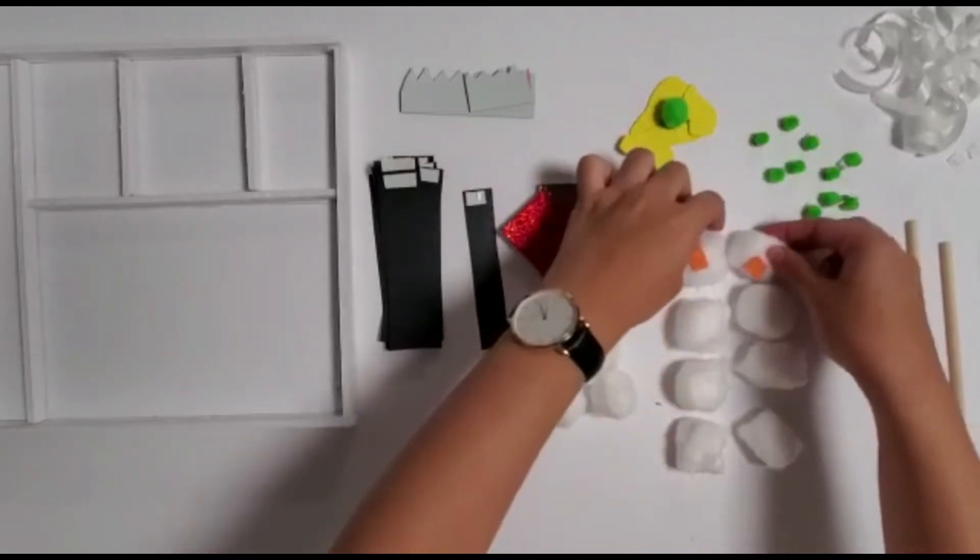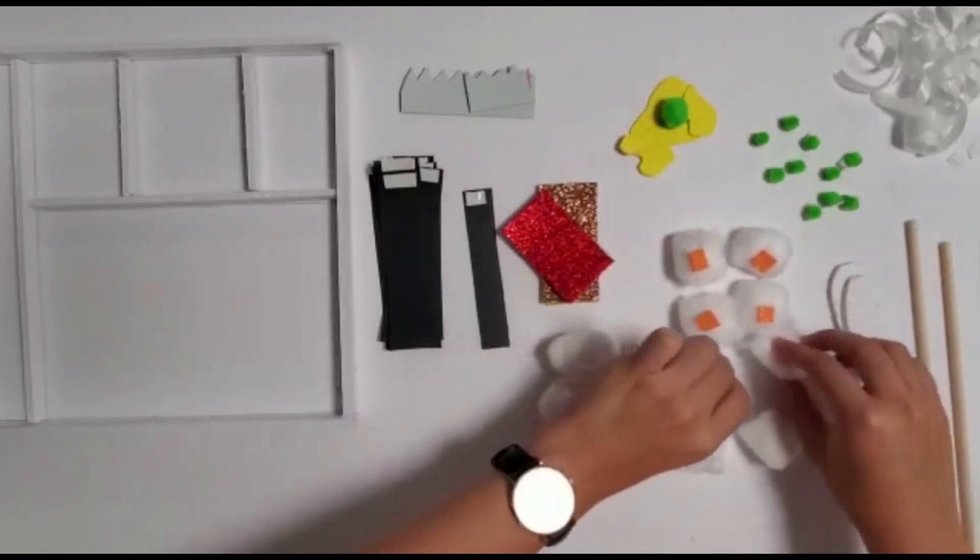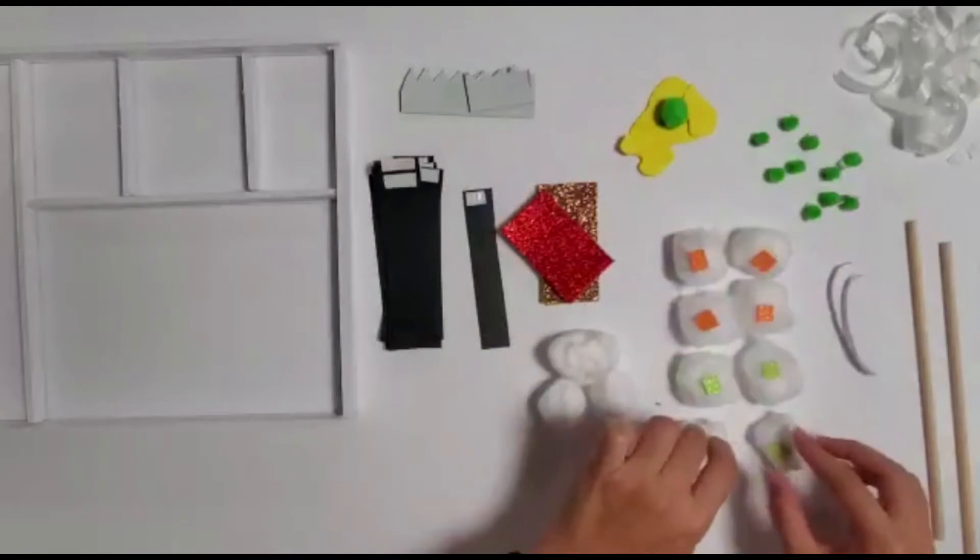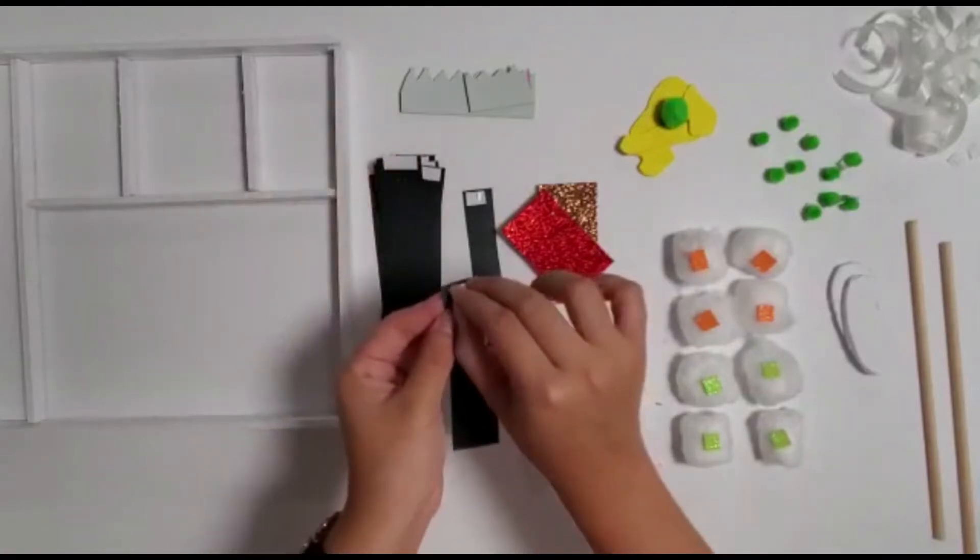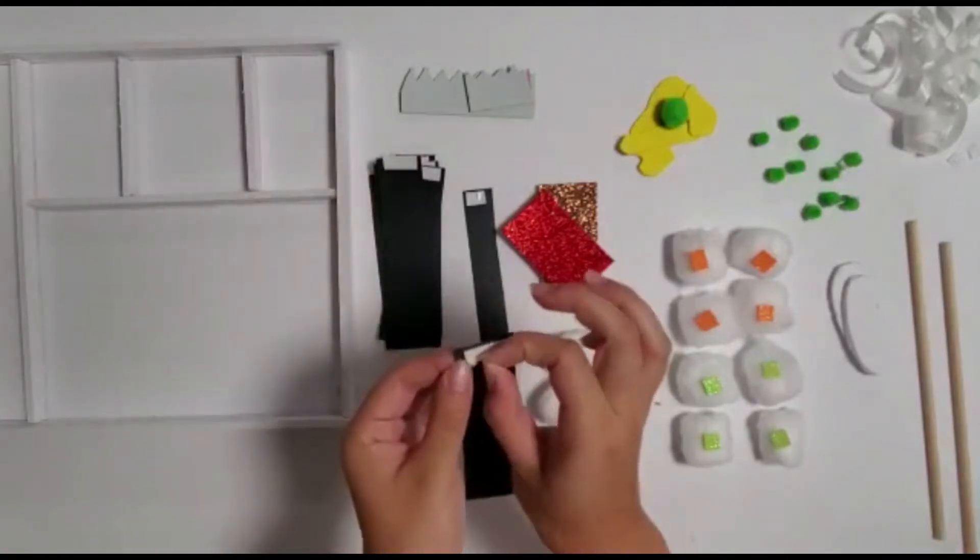Now let's make some sushi. Starting with the maki rolls, stick a small square piece of glitter foam onto a cotton ball or piece of rice. Grab one of the eight wider pieces of black construction paper and peel the backing off the tape.